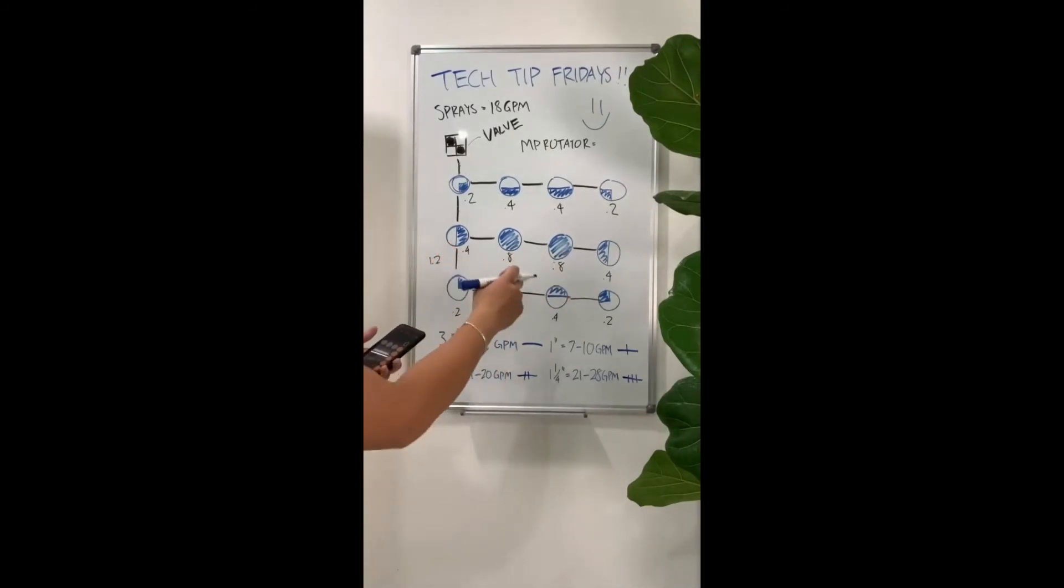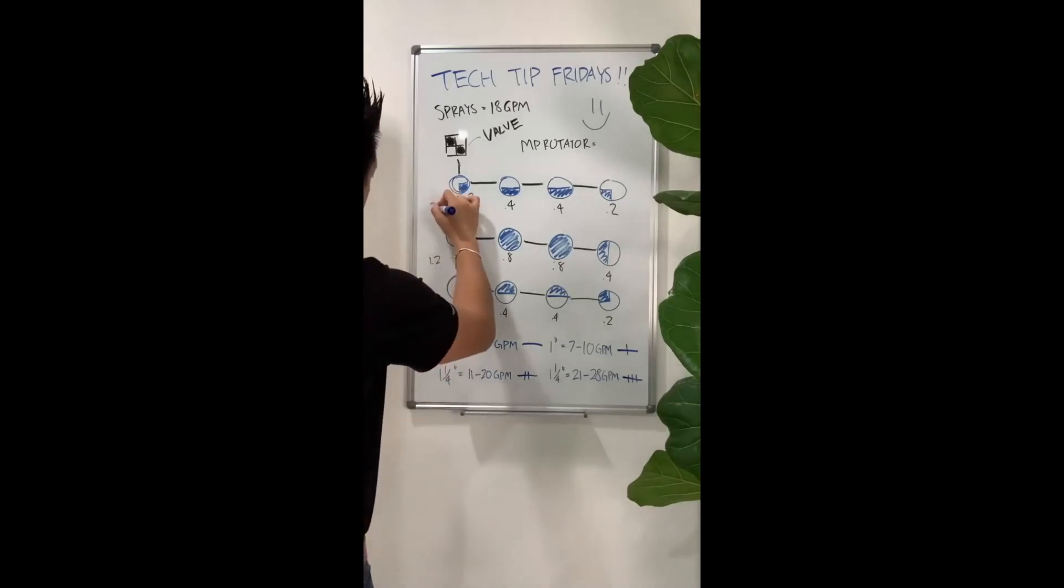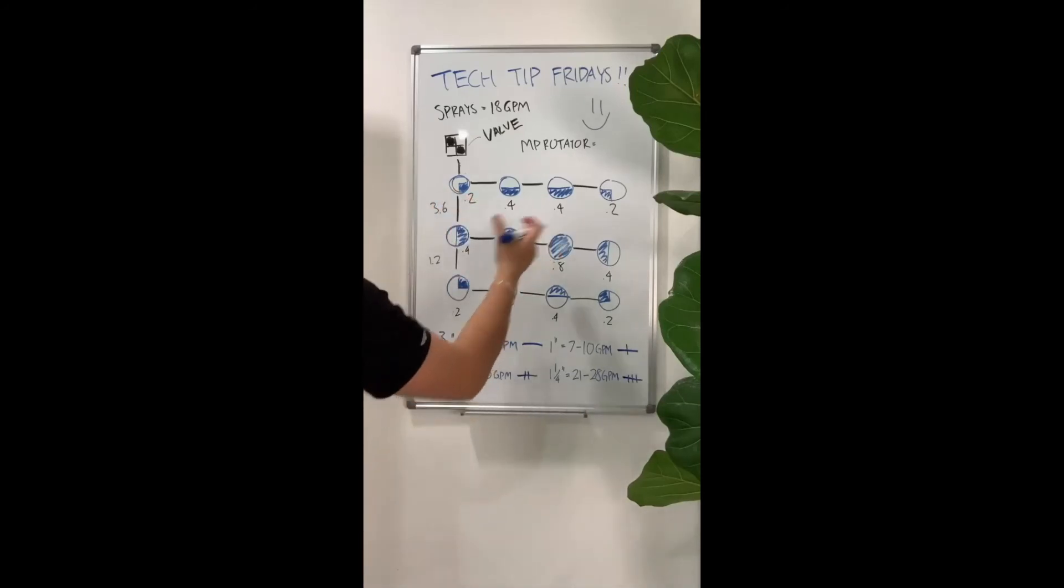Next thing we want to calculate is the middle section. So you got 0.4 plus 0.8 plus 0.8 plus 0.4, which gives us 2.4. So 2.4 going through that section right there. And 2.4 plus 1.2 to figure out this section right here, which is 3.6 GPMs.